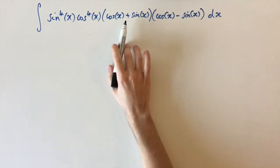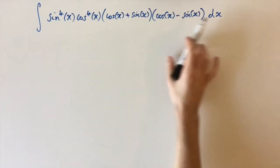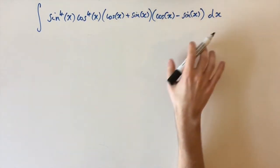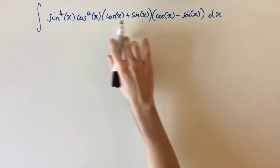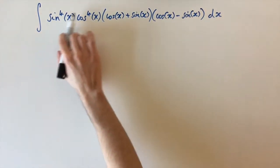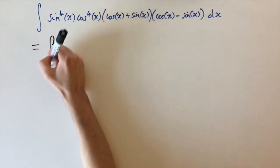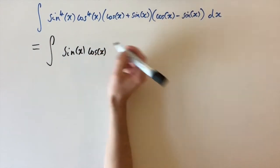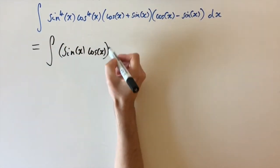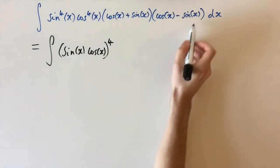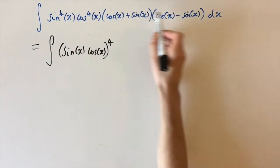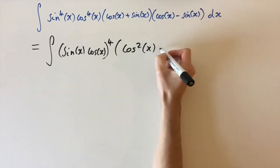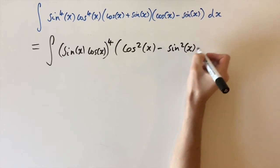We've got this integral involving lots of factors of sines and cosines. This question is essentially going to be about remembering the trig identities. To use them, I'm going to start off by simplifying slightly so we can see where we need to use them. I'm going to expand these brackets out and factor out the power of 4. So we can write this integral as sine of x times cosine of x, all to the power of 4. If we expand these two brackets out, this is actually a difference of two squares, so we're left with cosine squared of x minus sine squared of x dx.